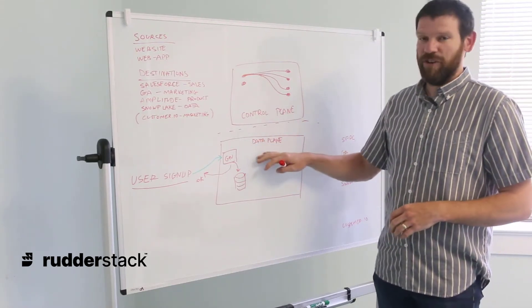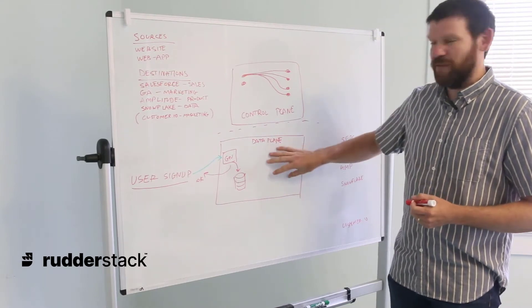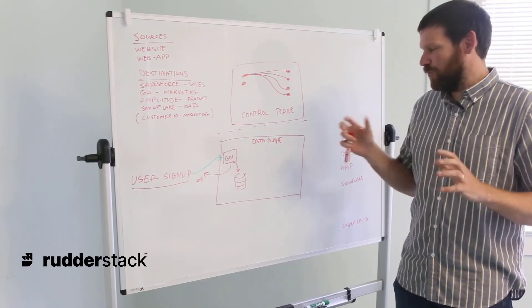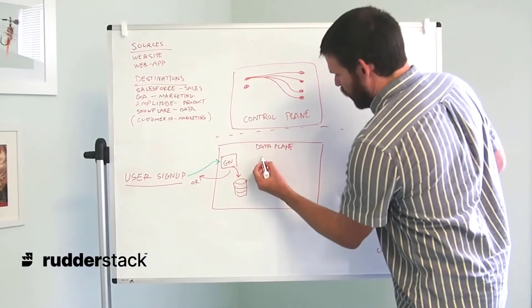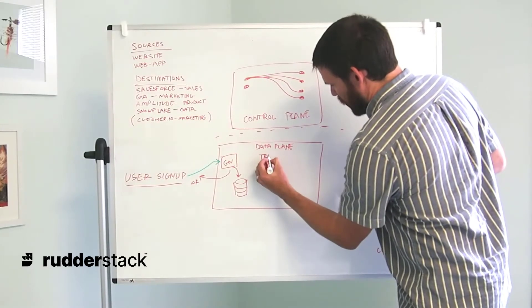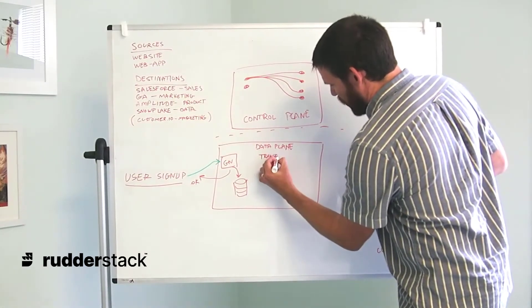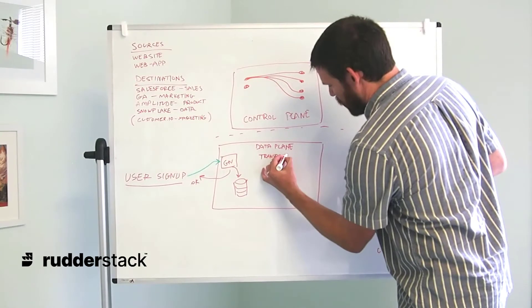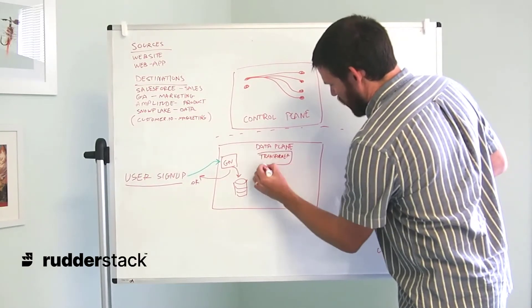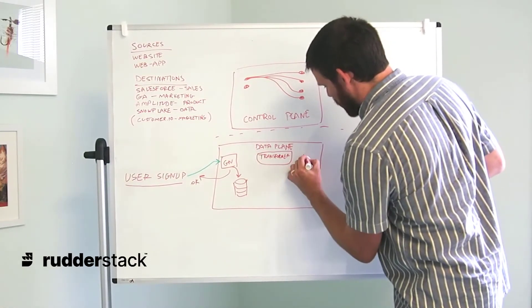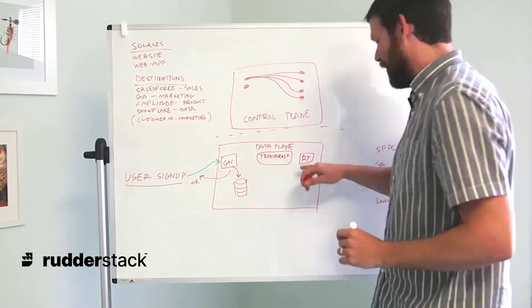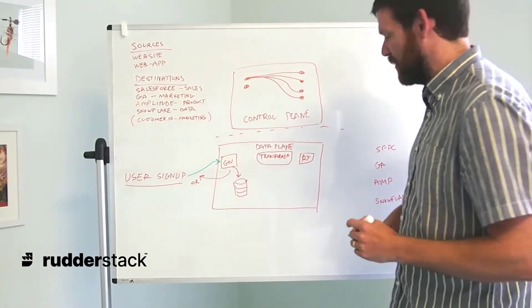Once in the RudderStack server, we have a number of different services that are part of the data plane with various roles. Most notably, we have our transformer, which is responsible for getting our data in the right format for downstream tools. Then we have the router, which is responsible for routing all of those transformed events to the downstream destinations.